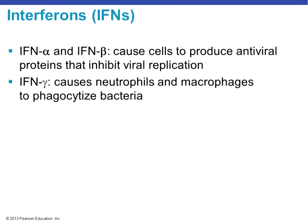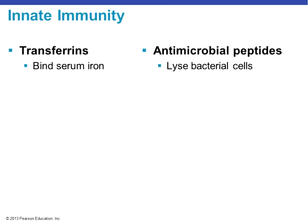There are three types of interferons to remember. Alpha and beta interferons cause the cell to produce antiviral proteins that inhibit viral replication within the cell, and also cause neutrophils and macrophages to enhance their phagocytotic activity. Transferrins bind up iron in the blood so microorganisms don't have that trace element available for their metabolism, thus preventing proper metabolic function. Antimicrobial peptides are protein fragments that kill bacterial cells. That is all of Chapter 16 — next time we'll talk about Chapter 17, adaptive immunity.